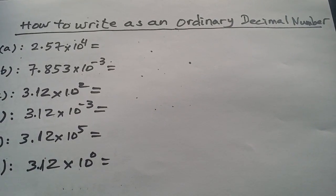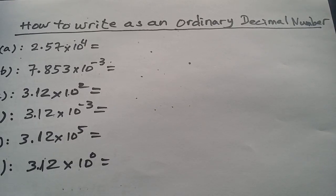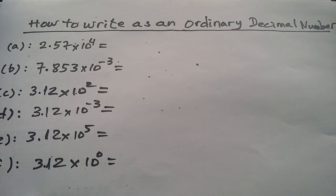Now we study about how to write as an ordinary decimal number. We have scientific notation here, and then we would like to write as an ordinary decimal number. So how can we write it?